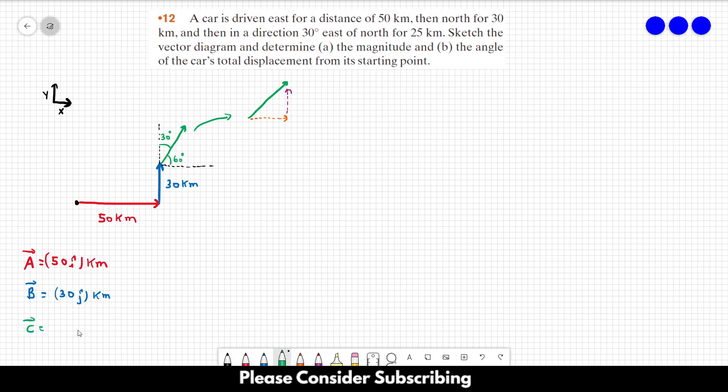This is vector C, which is equal to the x component plus the y component. The x component would be 25 multiplied by cosine of 60 degrees in the i direction plus 25 sine of 60 degrees in the j direction. And everything in kilometers.